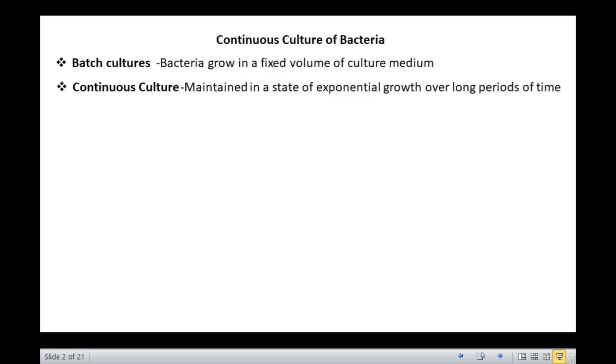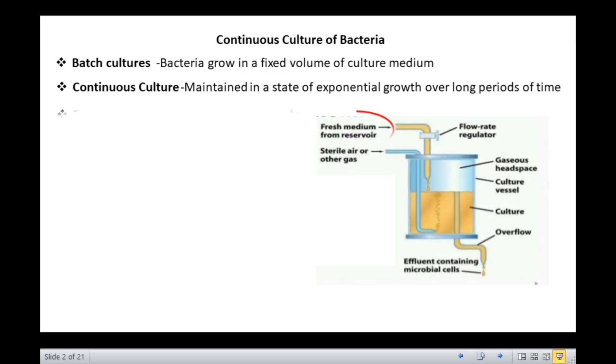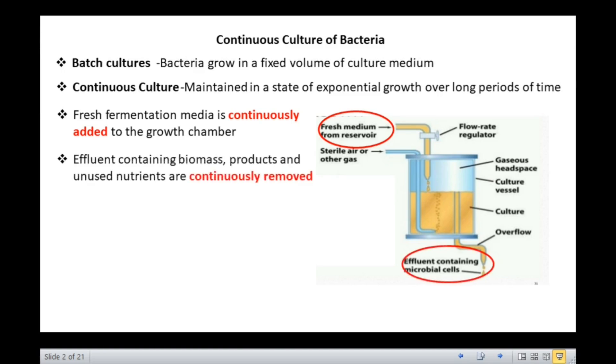In a continuous culture, fresh fermentation media is continuously added to the growth chamber while effluent containing the biomass, products, and unused nutrients are continuously removed. Thus, the volume of the liquid in the growth chamber is maintained constant.